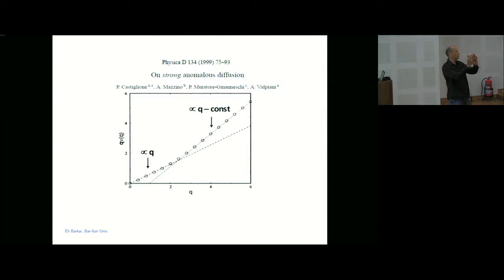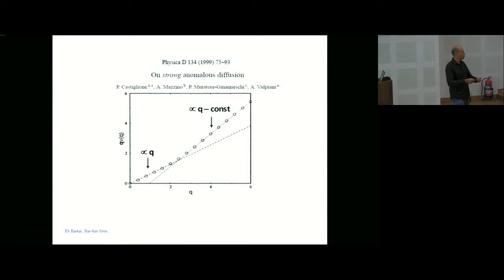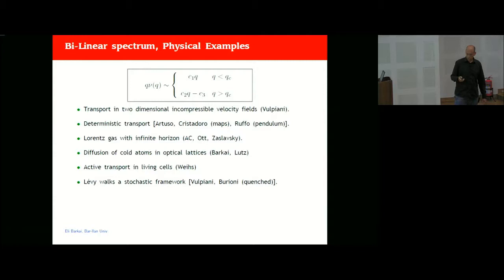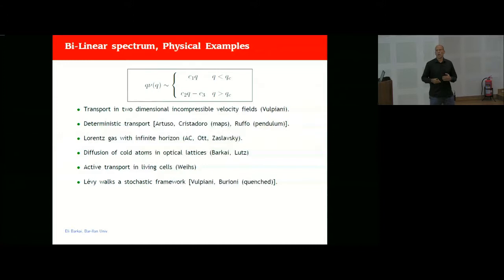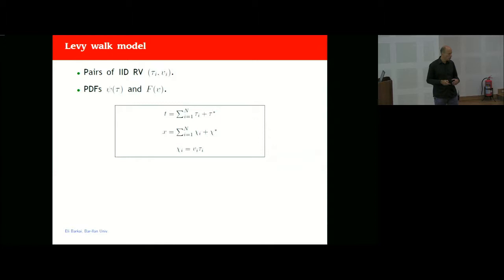Low-order moments, which capture the center part of the propagator, are described more or less diffusively, while higher moments scale ballistically. The lower moments are described by central limit theorems, but the upper ones will be described by a different distribution — an infinite distribution which is not normalized. This type of bilinear scaling, with one behavior below q_c and another above, has been found in many models starting with the work of Vulpiani, including the infinite horizon Lorentz gas and diffusion of particles in cells showing super-diffusion.